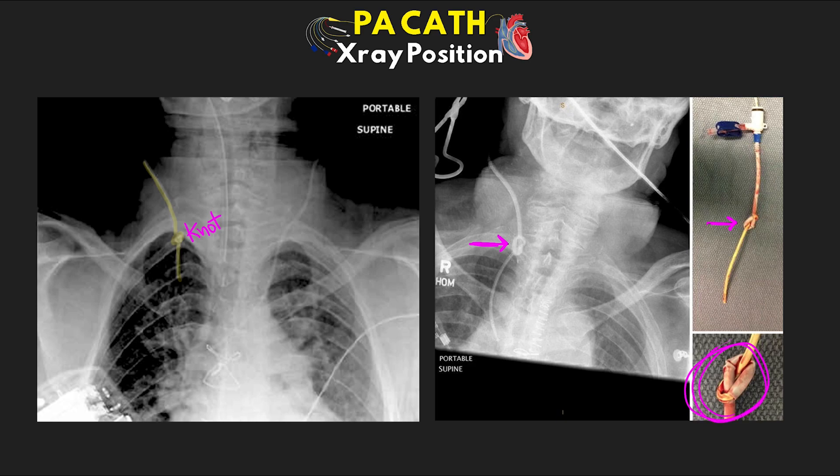So that was our review over pulmonary artery catheters and checking their position on x-ray. We covered a lot of different examples. Hopefully this will carry with you moving forward and you'll have a better idea when you get an x-ray of your patient, being able to assess and see what's going on with that PA catheter.